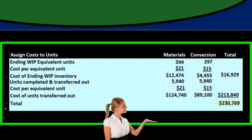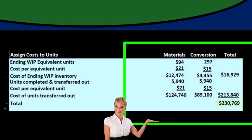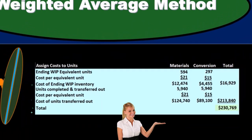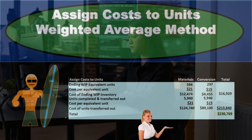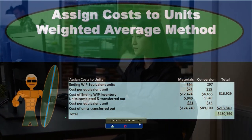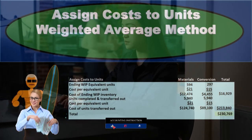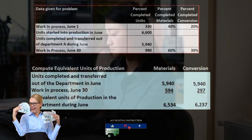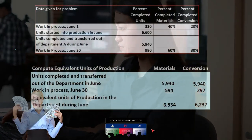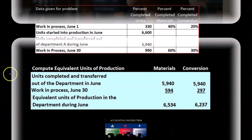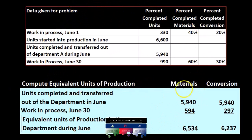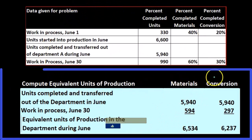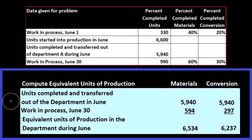We're going to use this information to assign the costs to units — to determine the amount of cost that is still in work in process for the department and the amount that was transferred out of the work in process. Here's what we determined in prior presentations: we computed equivalent units of production with relation to materials and with relation to conversion. Notice this is in units.